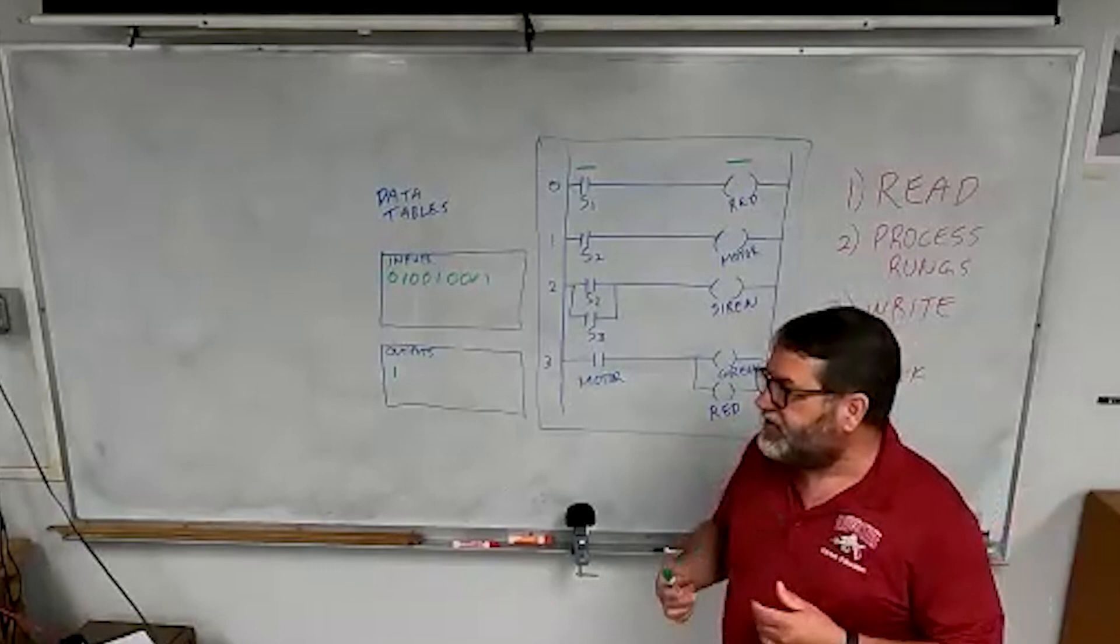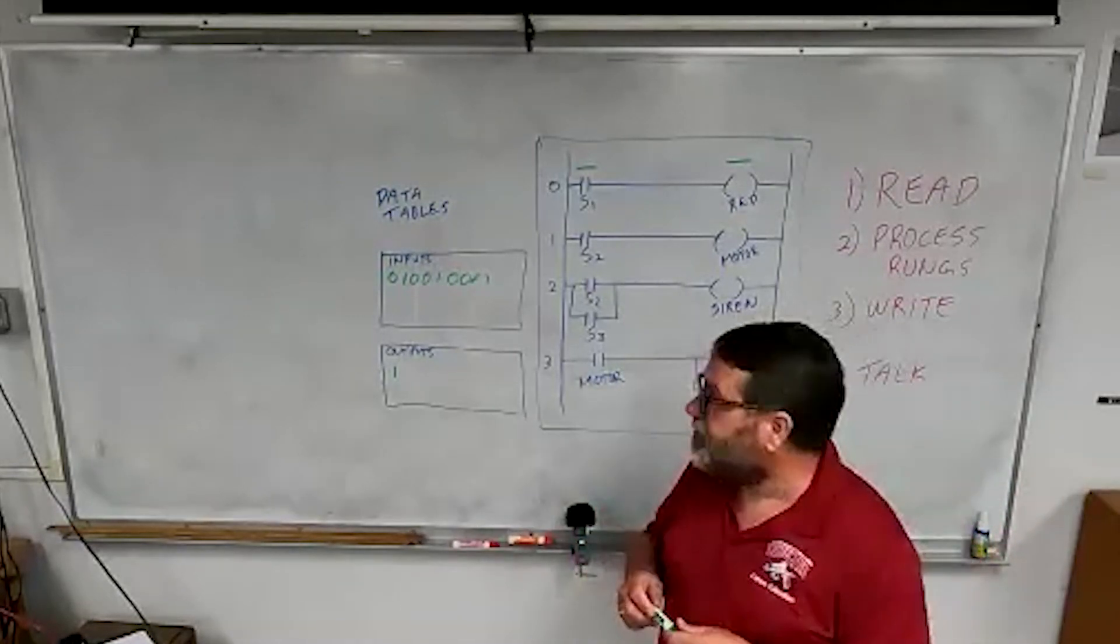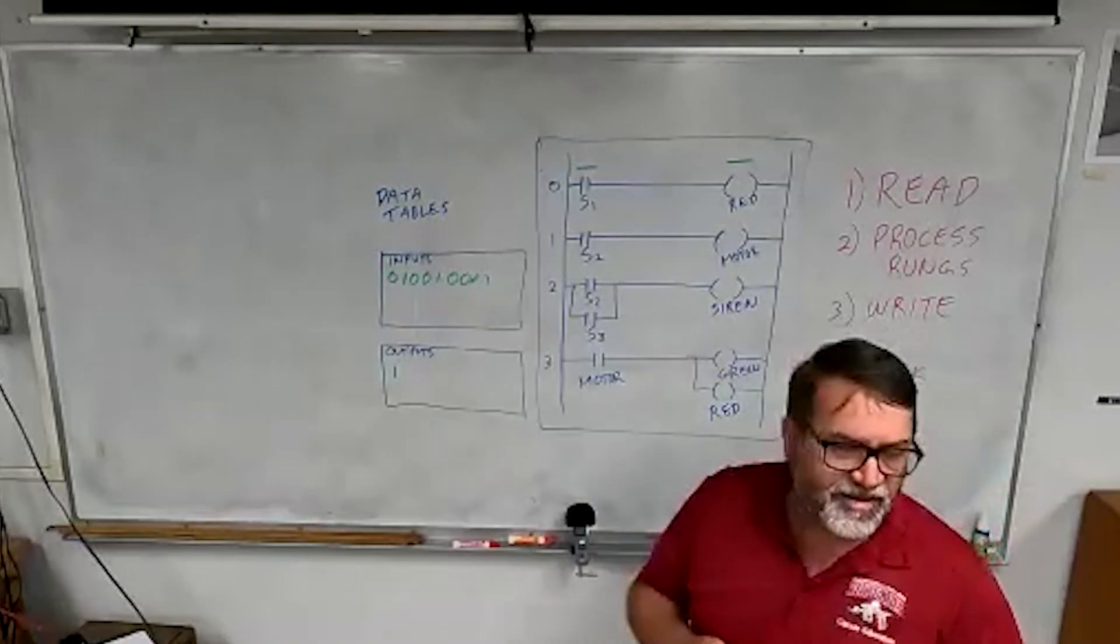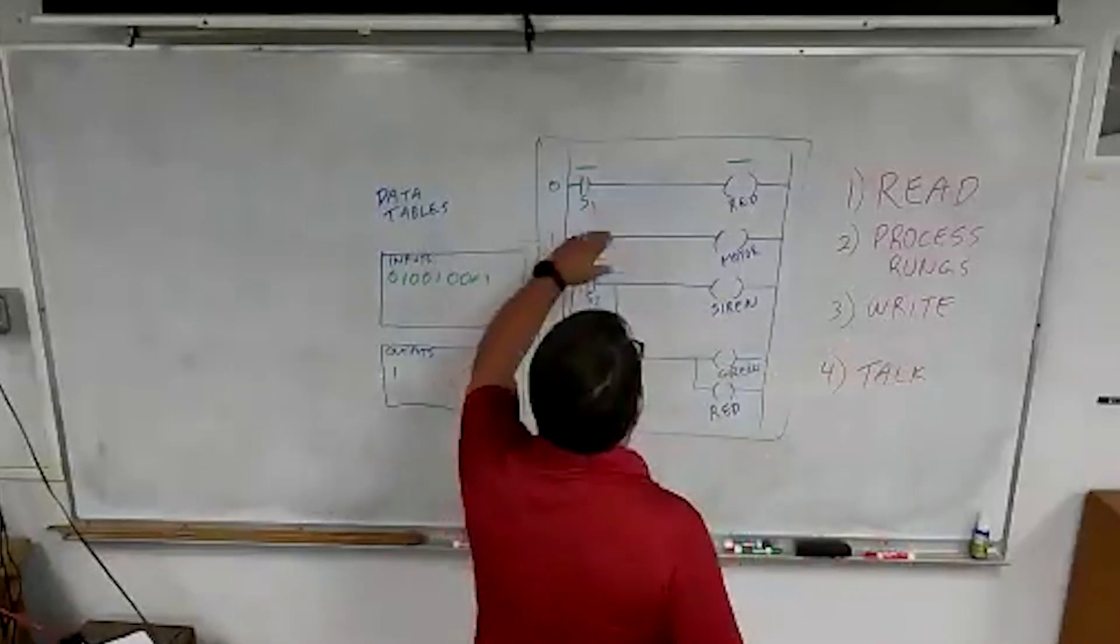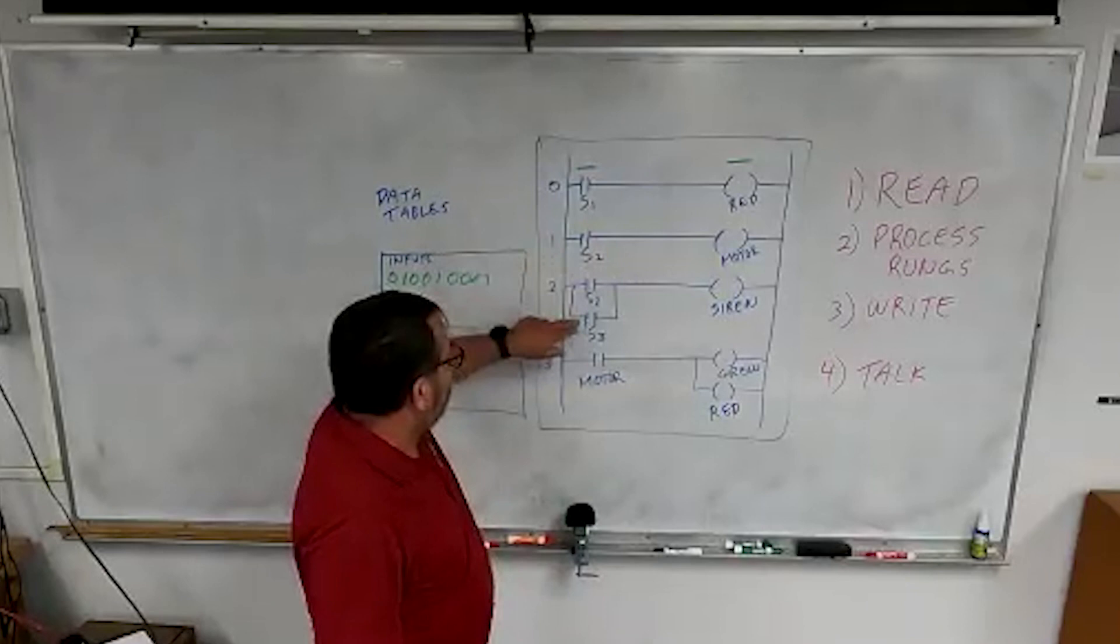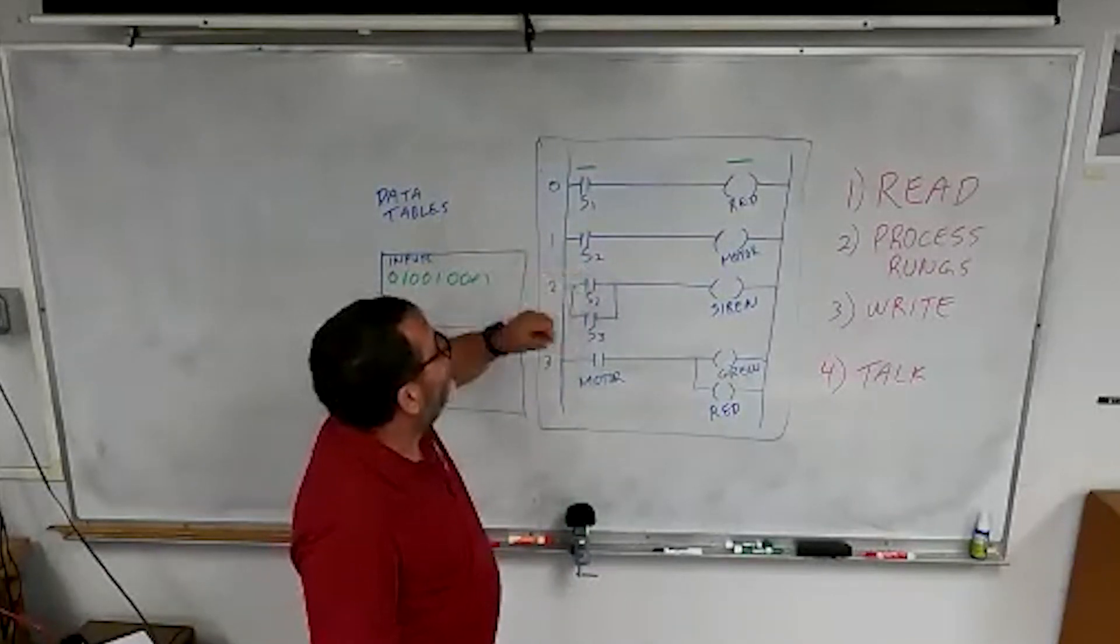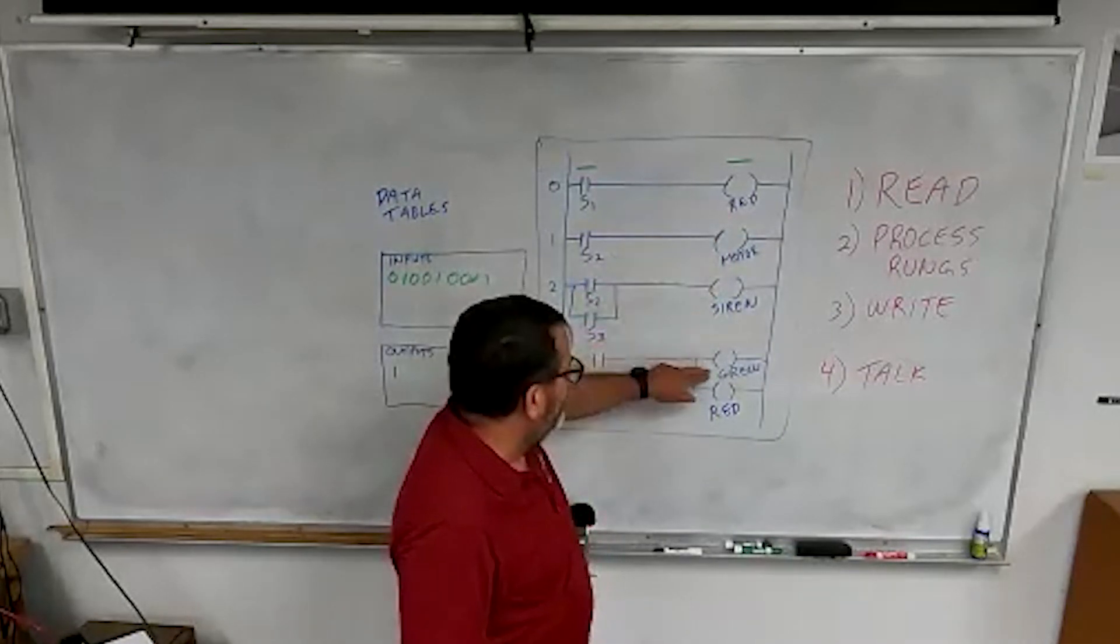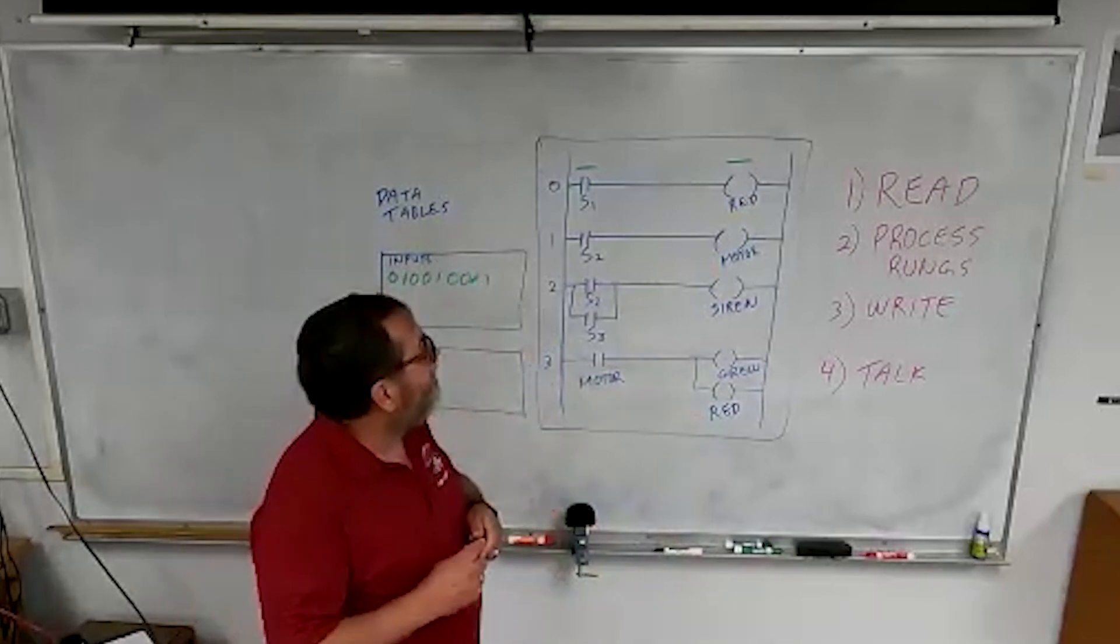It does them very fast, so it looks like it's doing everything at the same time, but it's not. And this is where it catches you up sometimes. Let's look at my logic here. I've got switch one, and switch two, and switch three here on my inputs. And then over here, I've got a red light, a motor, a siren, a green light, and a red light again.